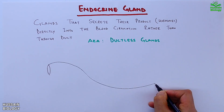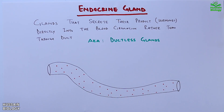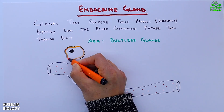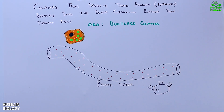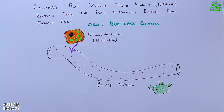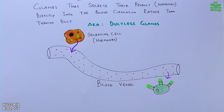Here in this diagram we can see the blood vessel, and on the upper side we have the cell having hormones, and on the lower side we have the receptor cell which has receptors for hormones. The hormone-secreting cell secretes the hormones directly into the blood circulation, and these hormones are carried away in the circulation towards the target site where these hormone molecules are received by the cell in order to carry out the specific function, as shown in the animation.